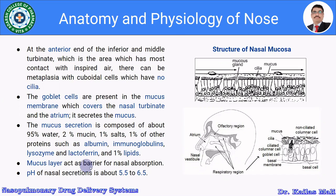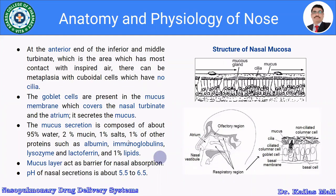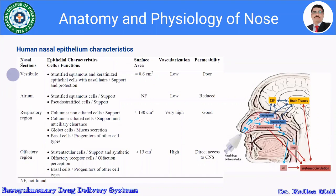The mucous layer acts as a barrier for nasal absorption — it is the first barrier. The pH of nasal secretion is about 5.5 to 6.5. This concludes the anatomy and physiology of the nose.